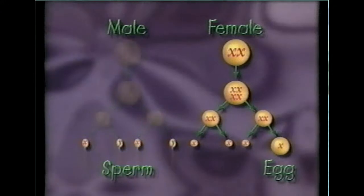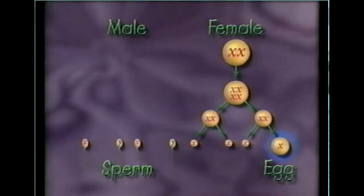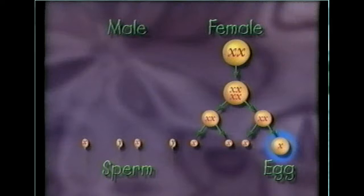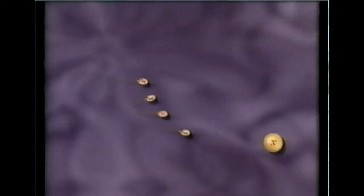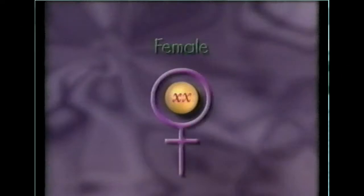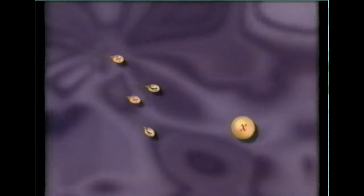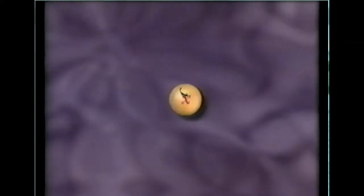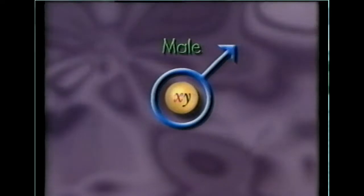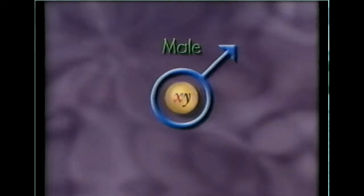In females, meiosis results in an egg cell with a single X chromosome. If that egg cell is fertilized by a sperm cell with an X chromosome, the offspring will be a female. If the egg is fertilized by a sperm cell with a Y chromosome, the offspring will be a male. So the next time you see one of those cuddly little critters hovering over your banana, remember the important role its ancestors played in our understanding of the sex chromosomes.